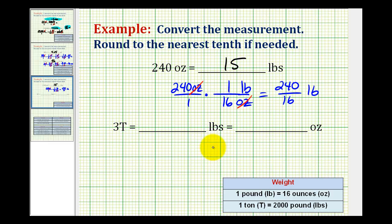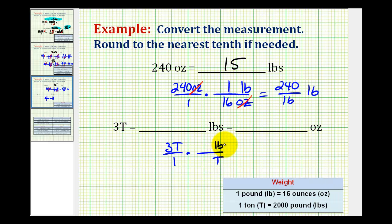For our second example, we want to convert three tons into pounds and then also into ounces. We'll write three tons as a fraction — three tons over one. The conversion is one ton is equal to 2,000 pounds, so we'll put tons in the denominator and pounds in the numerator. Notice the units of tons have simplified out, and this product gives us the number of pounds.